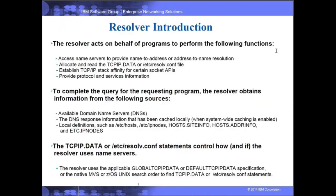The Resolver acts on behalf of programs for the following functions. It accesses name servers to provide name-to-address or address-to-name resolution. If I have a host name, I can resolve it to an IP address, or if I provide an IP address, I can resolve that to a host name. Part of the processing involves allocating and reading a TCPIP.data file — I'll use that as a general term, which can refer to etc/resolv.conf or any other file.